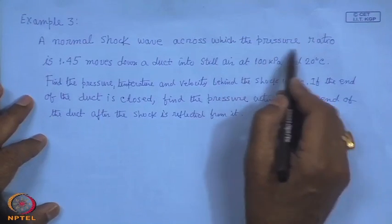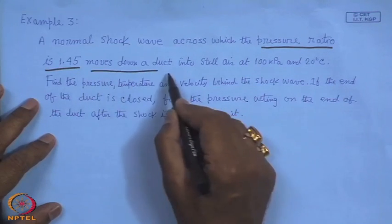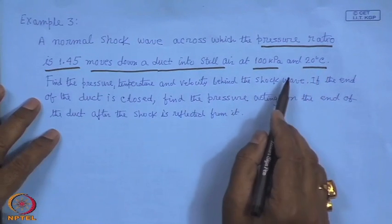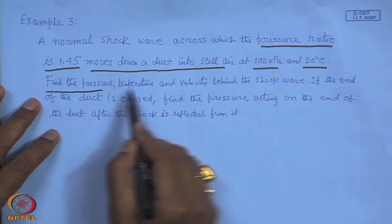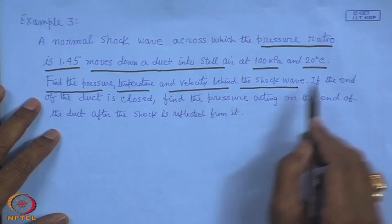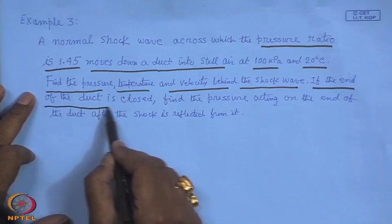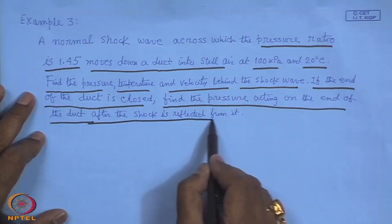The problem is as follows: a normal shock wave across which the pressure ratio is 1.45 moves down a duct into still air at 100 kilopascals and 20 degrees Celsius. Find the pressure, temperature and velocity field behind the shock wave — that is, the velocity, pressure and temperature rise induced by the shock wave. This we already covered. The new part is: if the end of the duct is closed, find the pressure acting on the end of the duct after the shock is reflected from it.